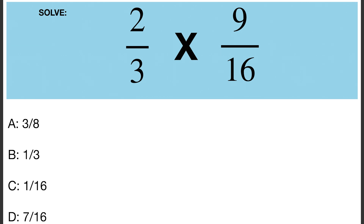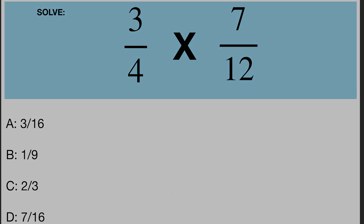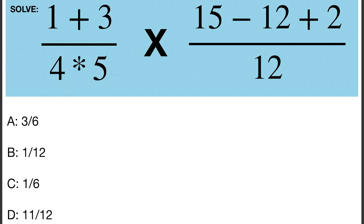2 over 3 times 9 over 16. 3 over 4 times 7 over 12. 1 plus 3 over 4 times 5 times 15 minus 12 plus 2 over 12.